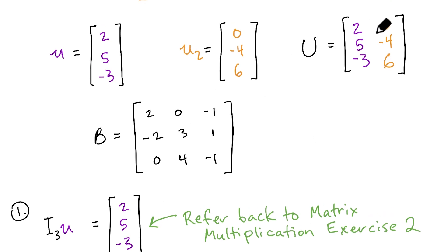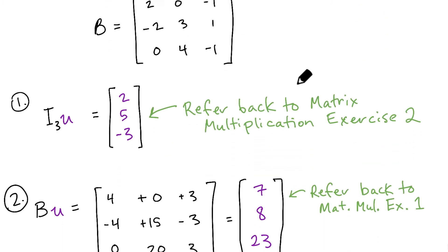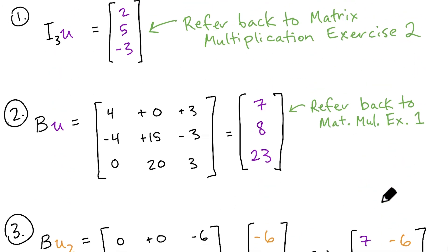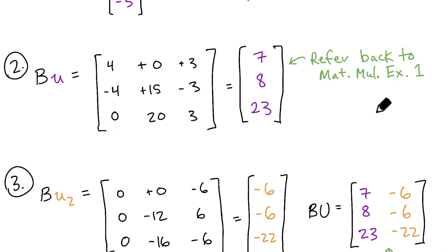If you don't believe me that you can calculate the two separate columns, calculate the result of applying this matrix B to the vector U and the vector U2, and then just concatenate those results together. If you don't believe me that this works, you can refer back to the matrix multiplication exercise 3 from the intro to linear algebra subject. All three of these exercises were done together in the same video.